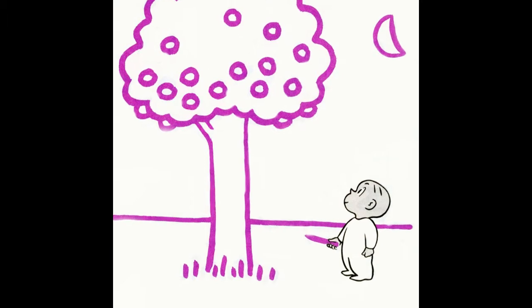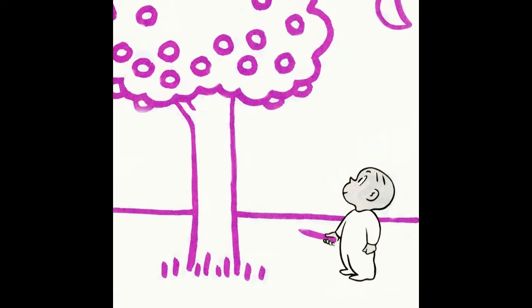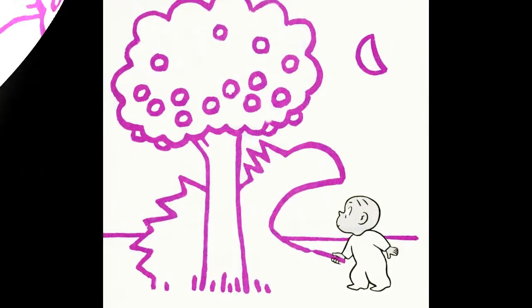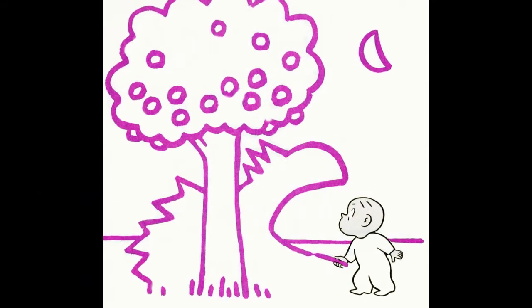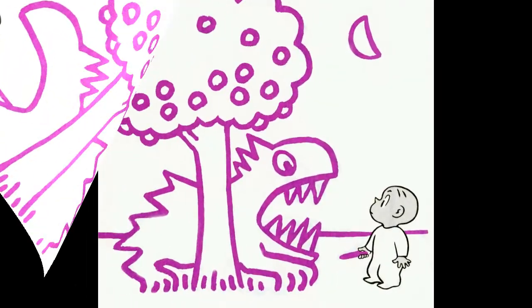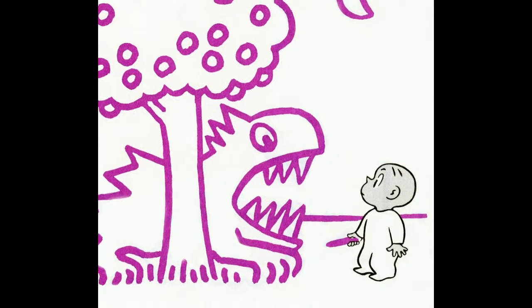The apples would be very tasty Harold thought when they got red. So he put a frightening dragon under the tree to guard the apples. It was a terribly frightening dragon.